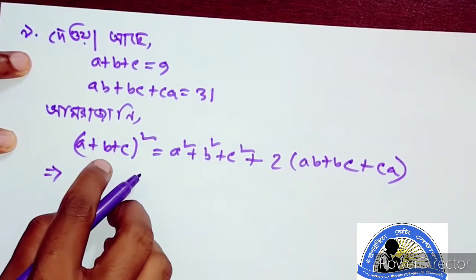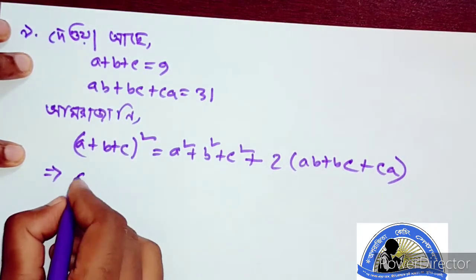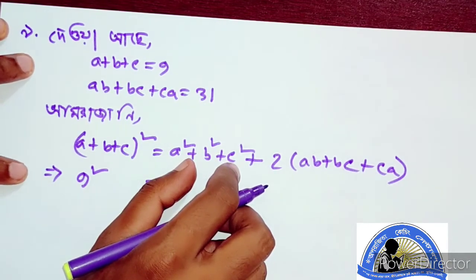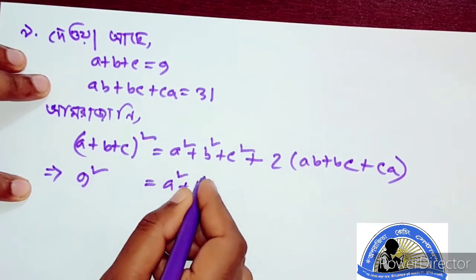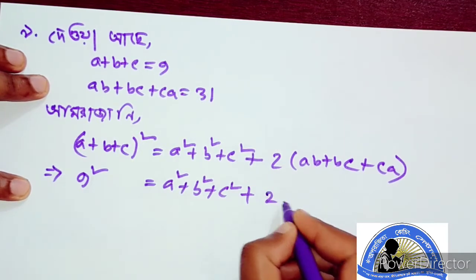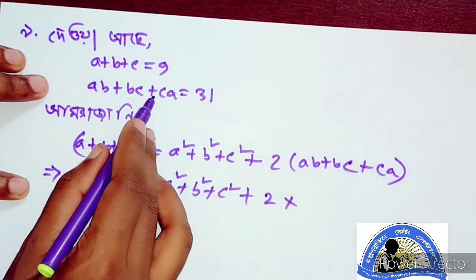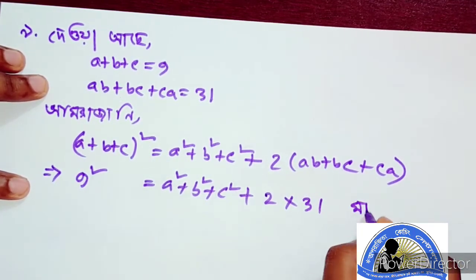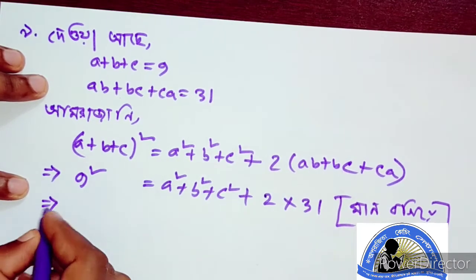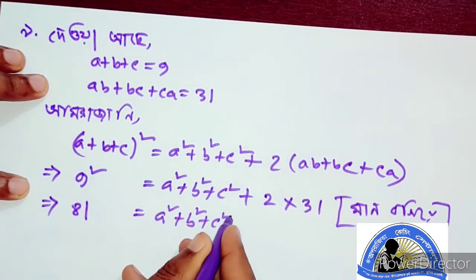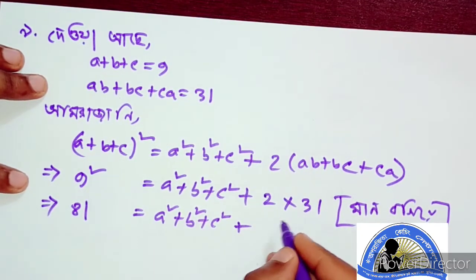Now we have a plus b plus c whole squared equals a squared plus b squared plus c squared plus 2 into ab plus bc plus ca, which equals 31. So we have 9 squared equals 81. Then we have a square plus b square plus c square plus 2 into 31, that is 62.